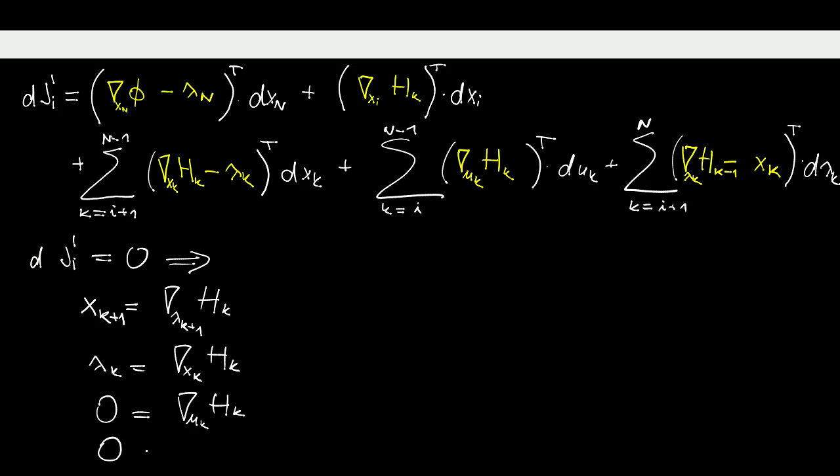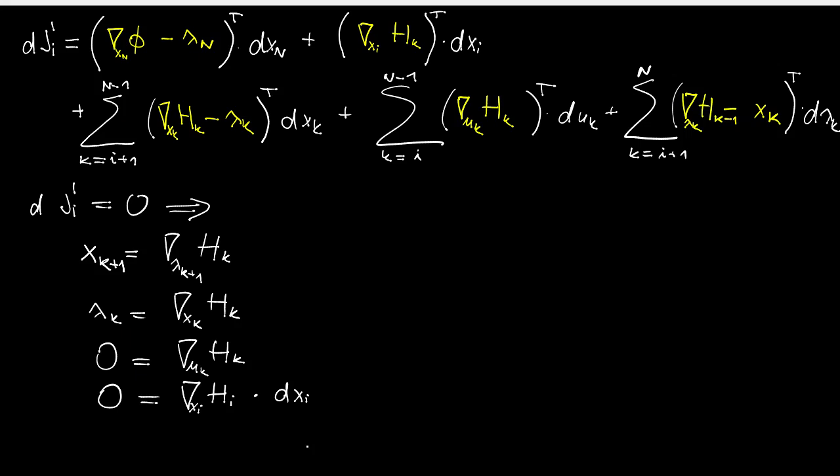So, first, what corresponds to the initial state. In fact, here, unless I really specify that the initial state is fixed, I need to put the whole term here. So, the whole product needs to be equal to 0. And then the very first term on the first line gives me this. And that's essentially it. This is the set of conditions that give me first order conditions of optimality.